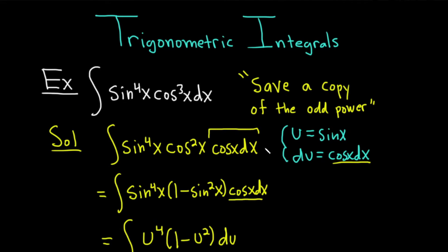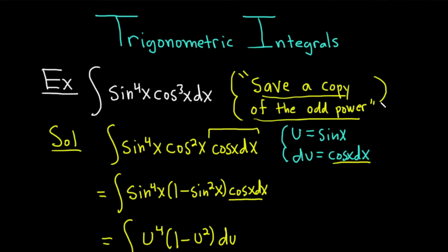The key is: whenever you have powers of sine and cosine, if you have something to an odd power, save a copy of the one that's to an odd power, and then u is the other one. If you memorize just that — save a copy of the odd power — you can come up with the rest. It requires minimal memorization and is more intuitive than formulas in textbooks.